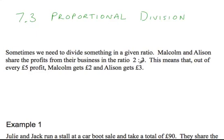That's how we read this here, 2 to 3. This means that out of every 5 pounds profit, for example, Malcolm would get 2 pounds and Allison gets 3. And so here the total 5 is shared between Malcolm and Allison in this ratio 2 to 3.